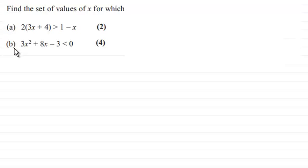And then in the second part, part b, 3x squared plus 8x minus 3 is less than zero.